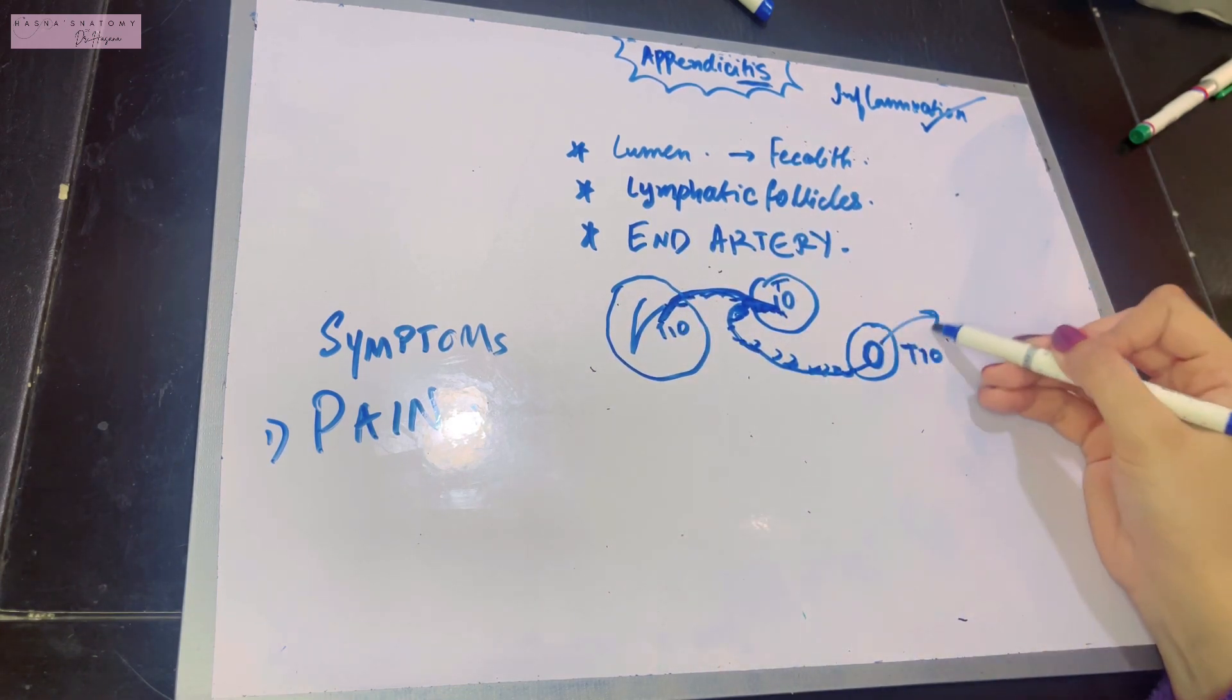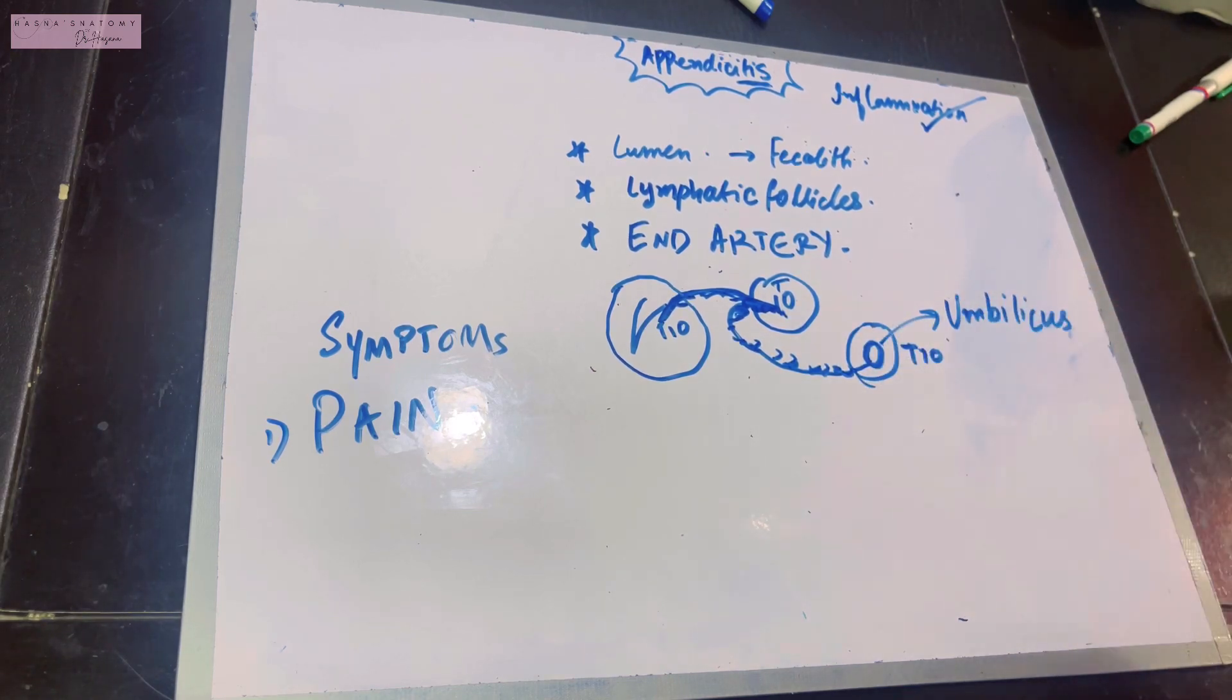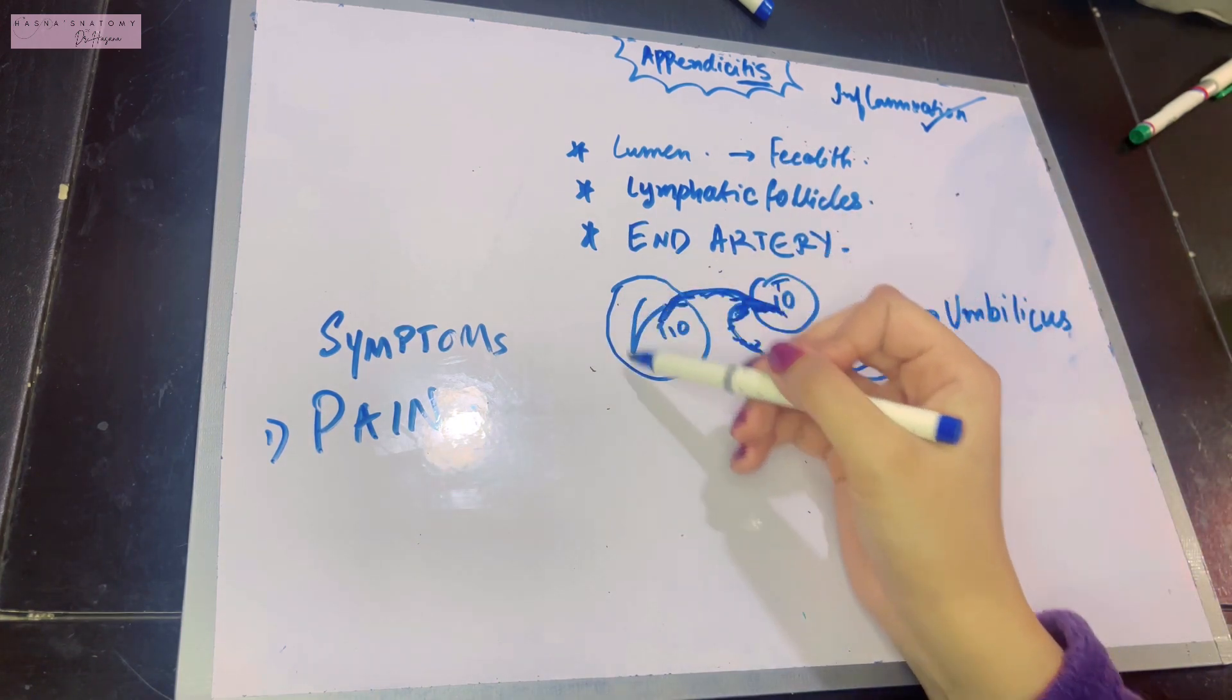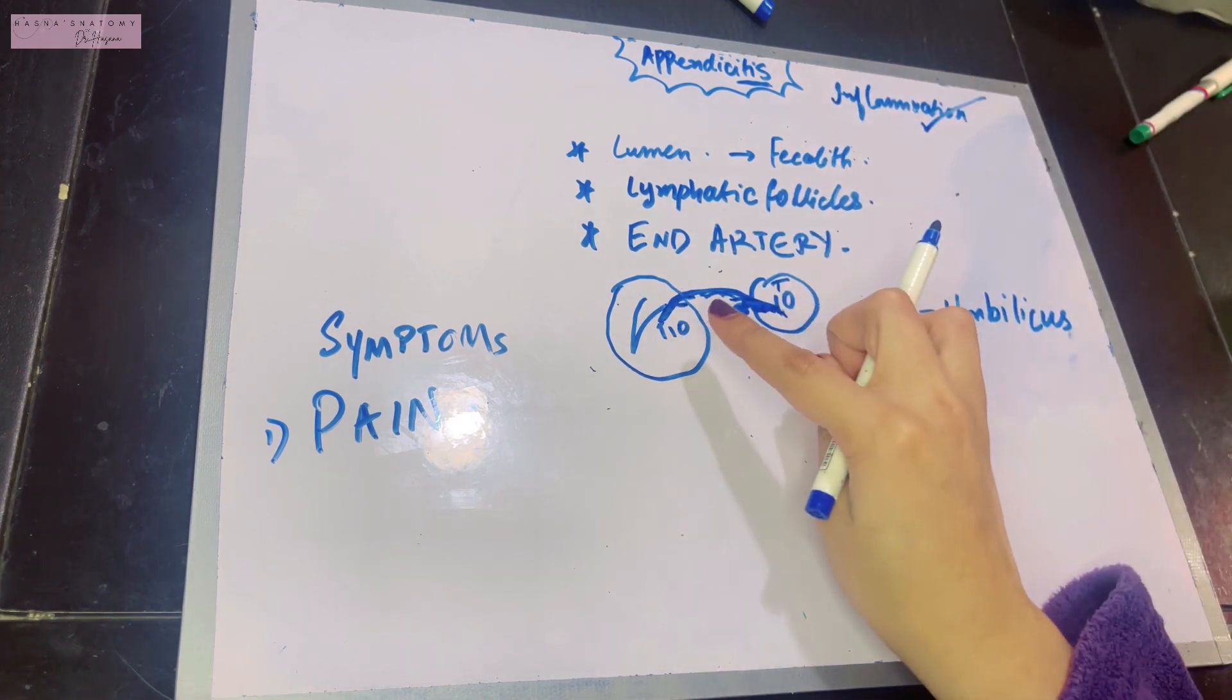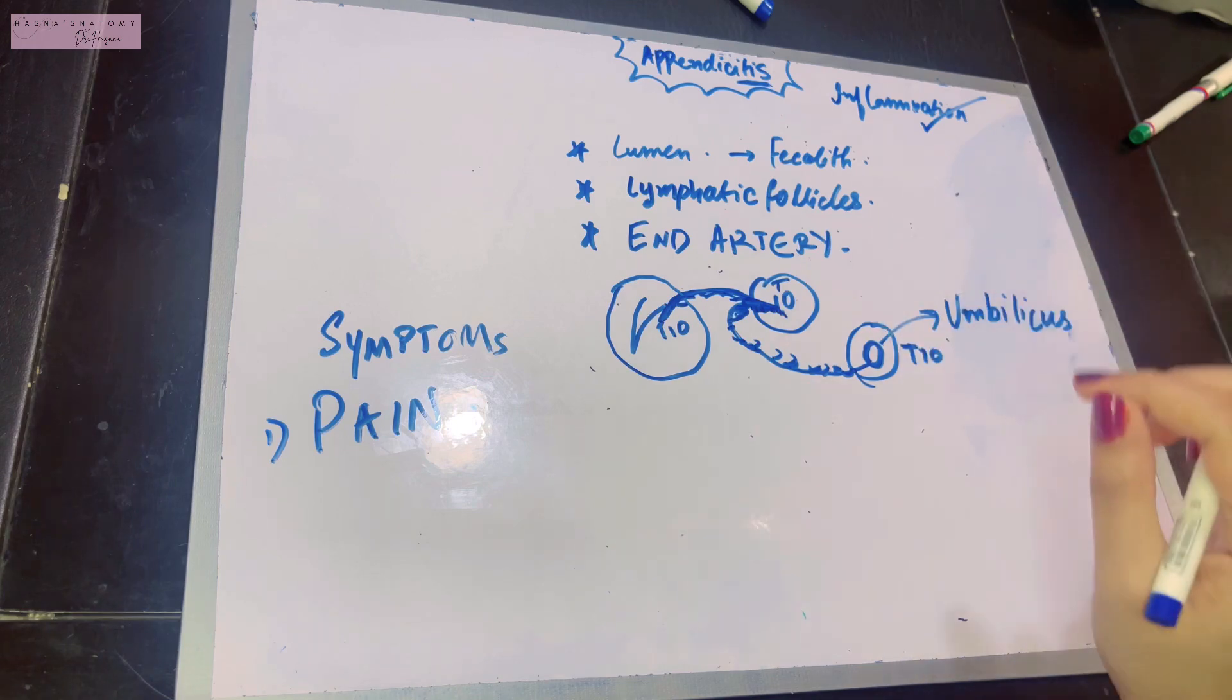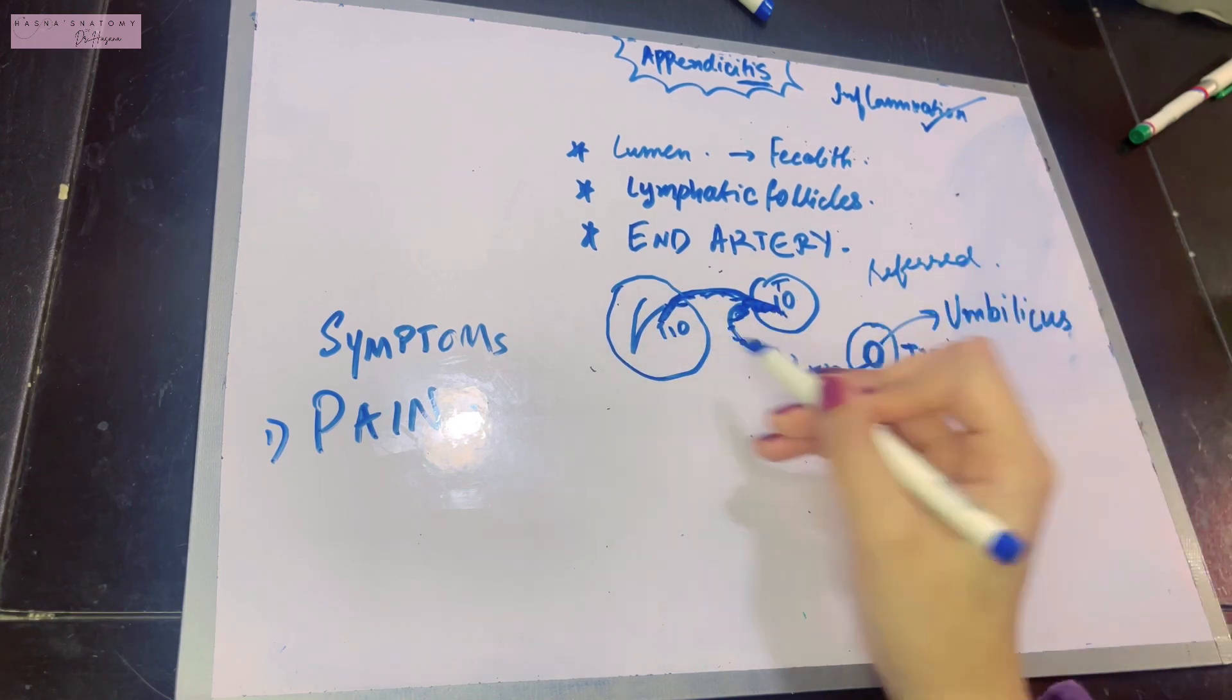The umbilicus has somatic fibers, which is why the pain of appendicitis will first be felt at the umbilicus point or periumbilical region, nowhere else. Remember this: the pain of appendicitis occurs at the umbilicus, not at the position of the appendix. This is a very important concept of referred pain.